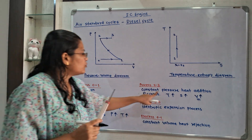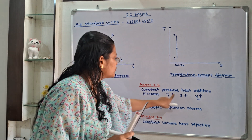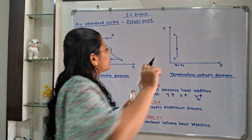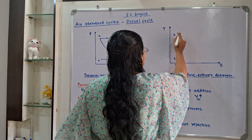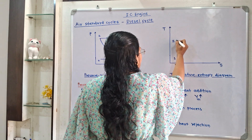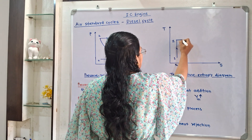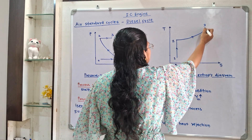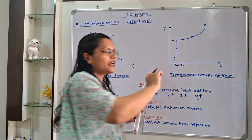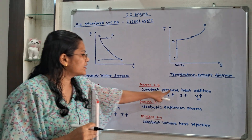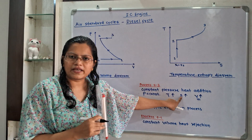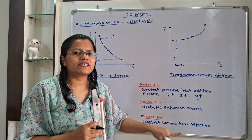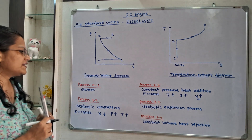Now for the temperature-entropy diagram: temperature increases and entropy increases. Remember, whenever a heat addition process takes place, entropy always increases, and for heat rejection, entropy always decreases.